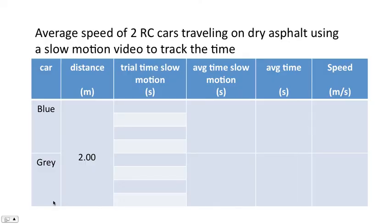So this is the table I'd like you to fill out. Here's the title: Average speed of two RC cars travelling on dry asphalt using a slow motion video to track the time. The distance is the same for each car, so it's only written once.